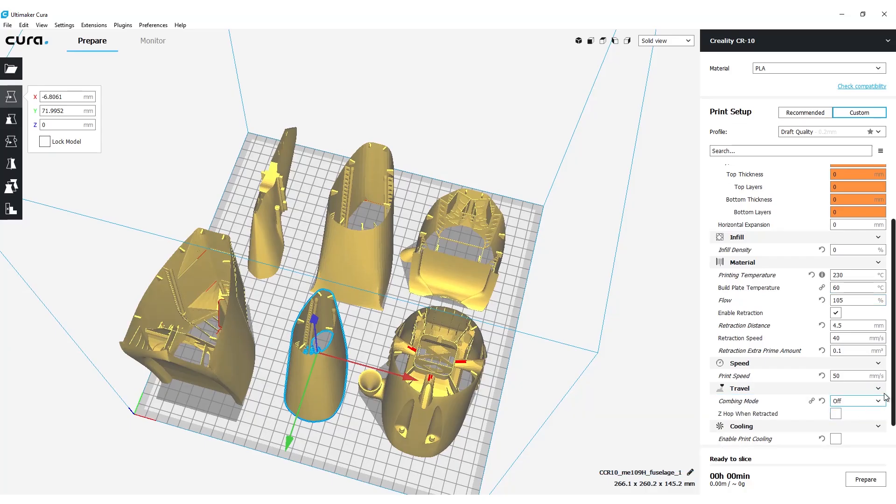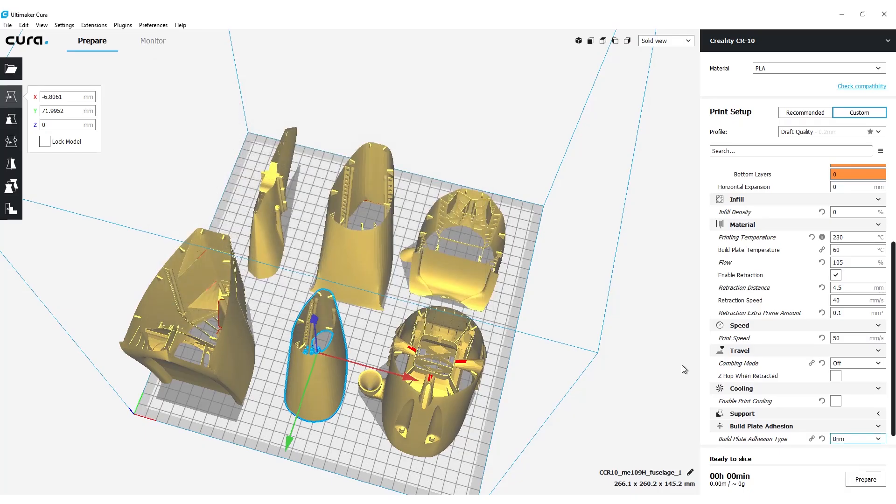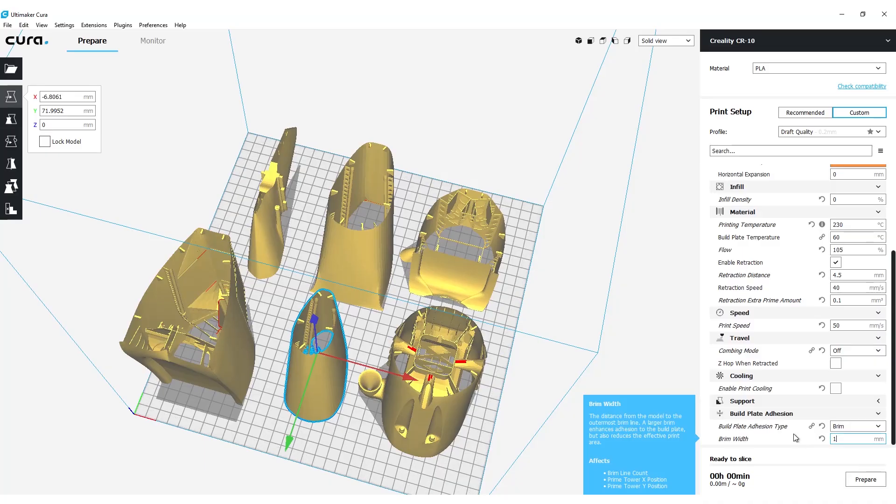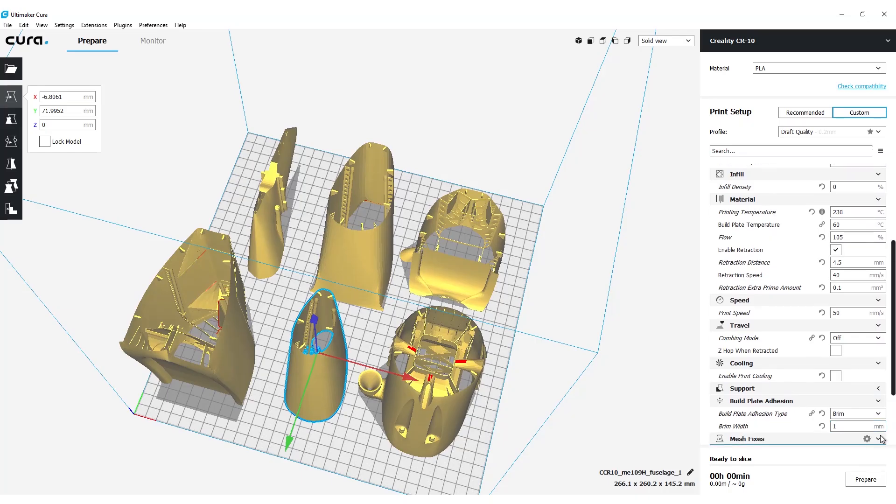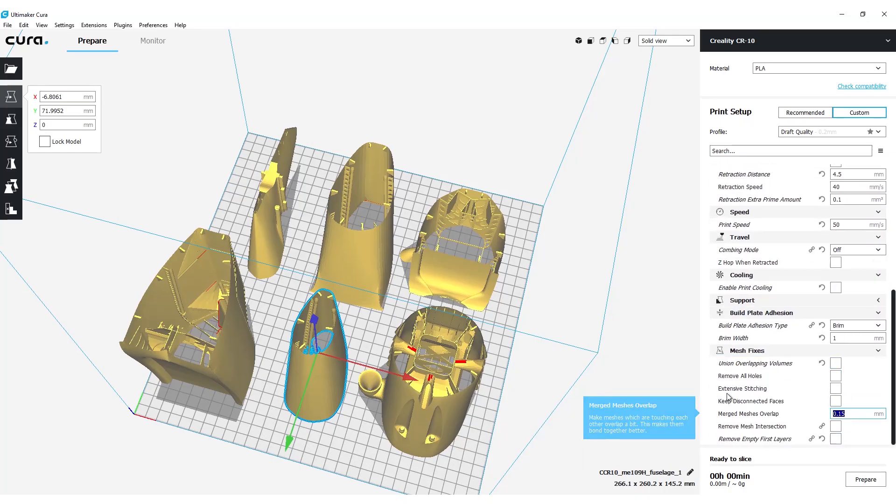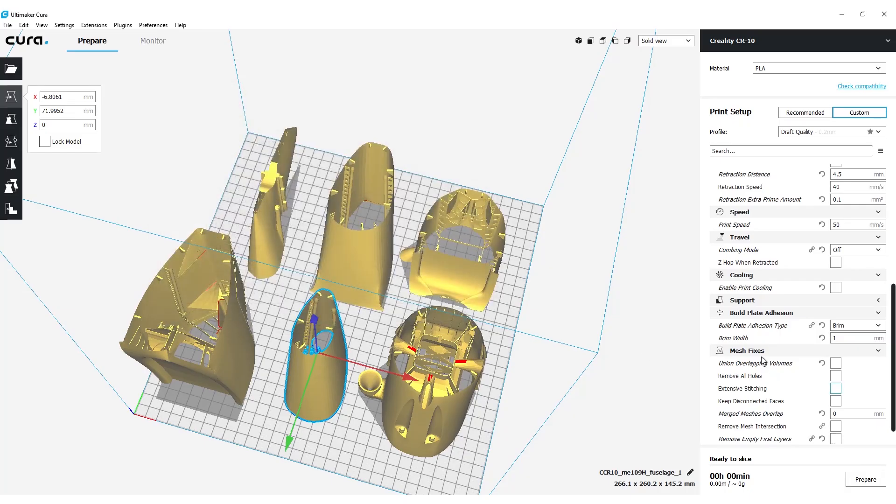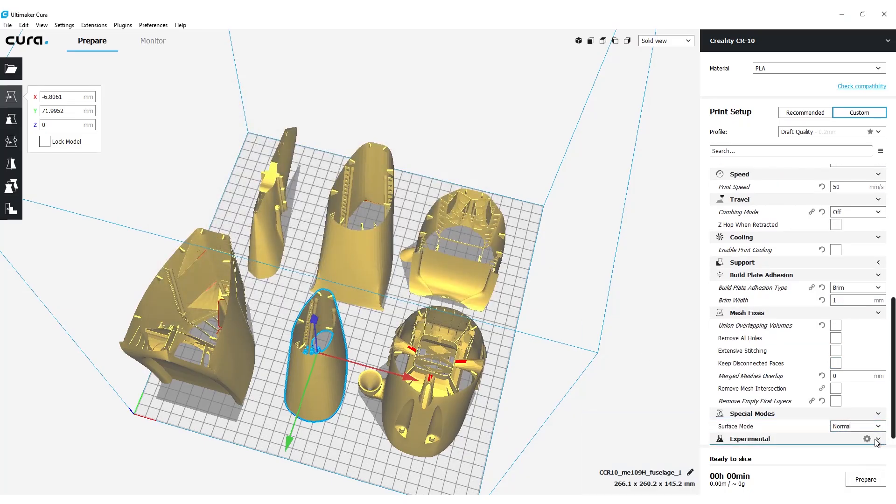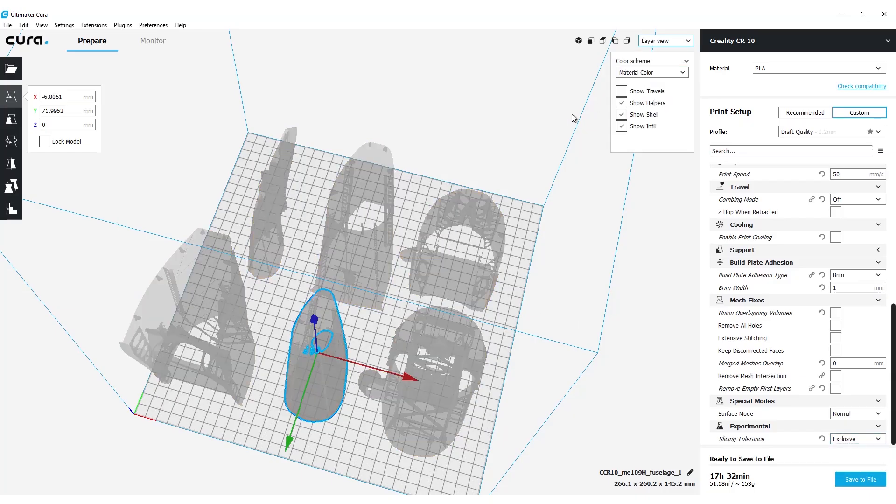The flow setting is also not visible by default and needs to be activated and adjusted. Combing needs to be deactivated. If you have bed adhesion problems, then a small brim can be added, but this is usually only necessary for the wing sections. Next we deactivate all mesh fixing options. At last we activate the slicing tolerance and surface mode settings and set them to exclusive and normal. This should now allow you to slice your airplane structure in Cura.